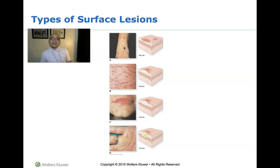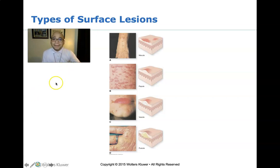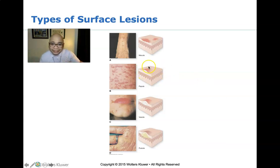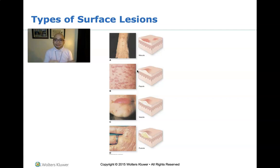The areas of discoloration are larger than or equal to one centimeter. So if it is larger than one centimeter, we do not call it a macule — we call it a patch. In figure B, what you can see is a papule. A papule is a raised area of skin tissue that is less than one centimeter around.